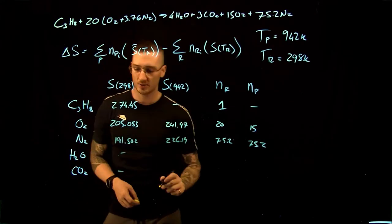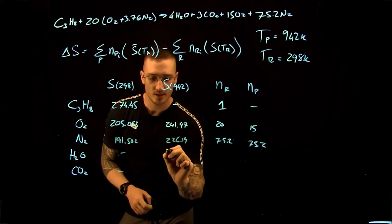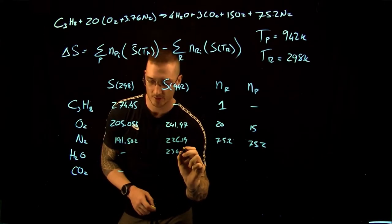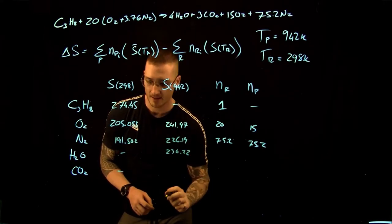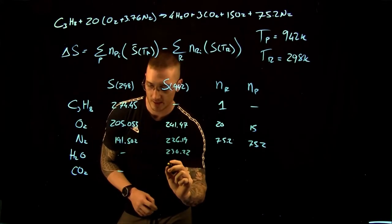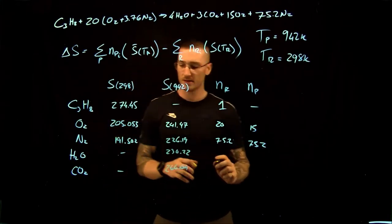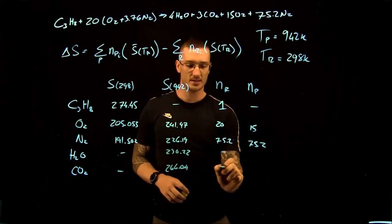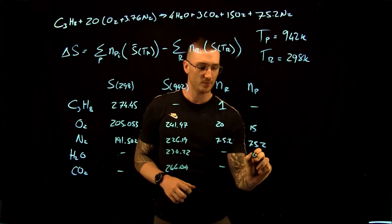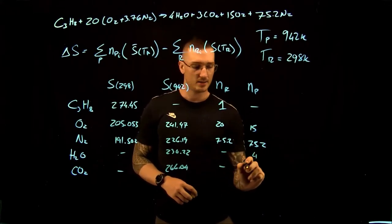For H2O, we have none at 298 Kelvin. It's 230.22 at 942. And for CO2, it's 266.04. This is all read from your tables. We have none in our reactants. We have 4 water in our products and 3 CO2 in our products.